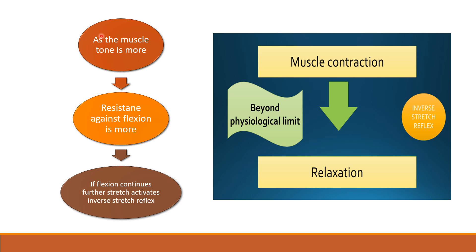In upper motor neuron palsy, the muscle is already hypertonic — its tone is normally high. When we try to flex it forcibly, the tension developed will cause contraction of the muscle — that is the stretch reflex. With this contraction, the tension will be raised further. And this tension will cross the physiological limit, which will stimulate the inverse stretch reflex pathway, resulting in relaxation of the muscle.